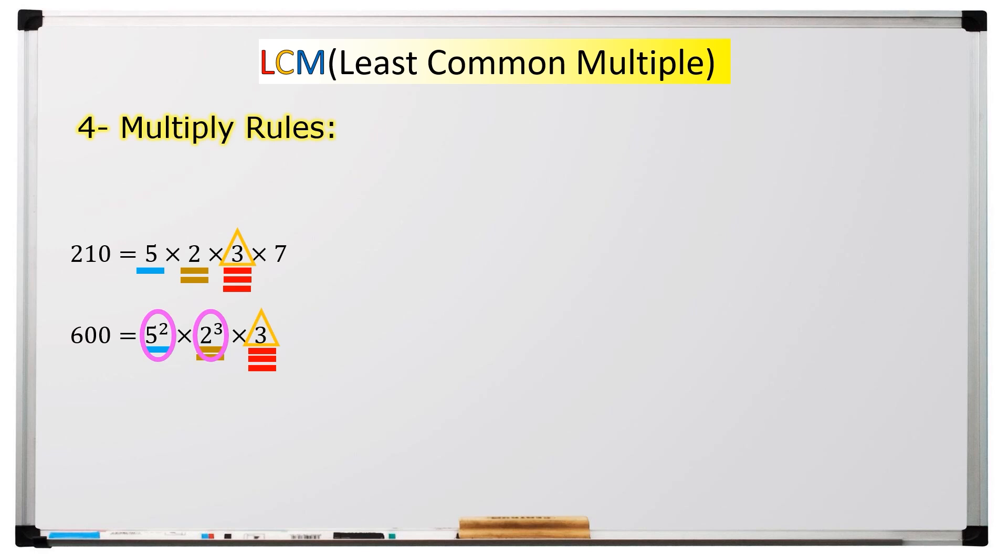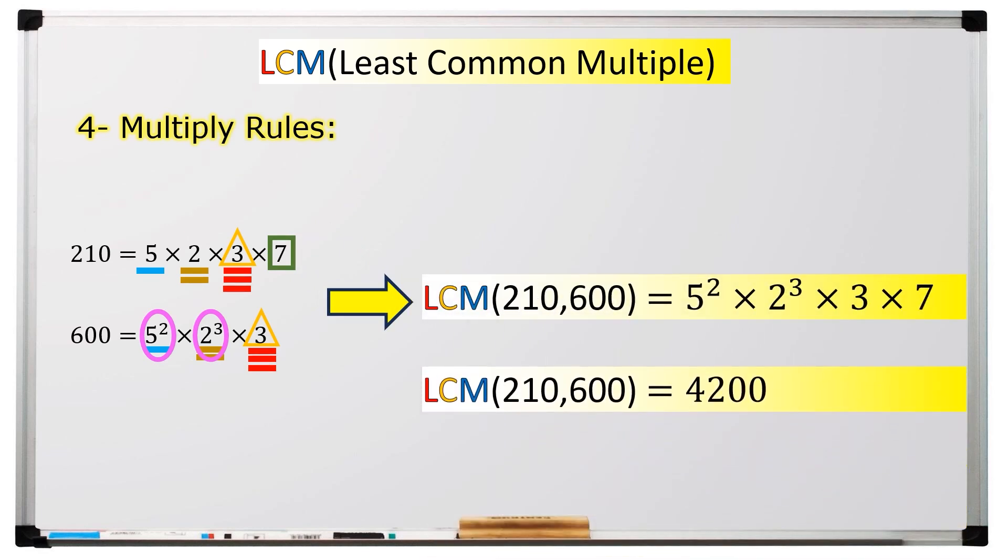But as you can see, seven is the only factor that is not in common. So we should multiply all these numbers to achieve LCM of two hundred ten and six hundred. As a result, we can say the LCM of two hundred ten and six hundred is four thousand two hundred.